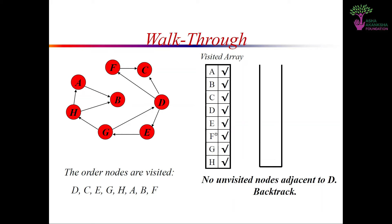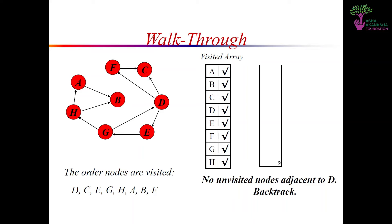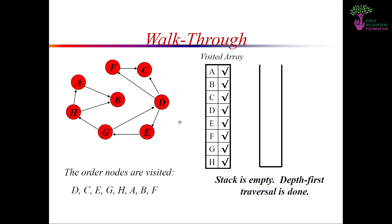We visit G, tick the visited array of G, and push it into our stack. From G we have two nodes coming out: D and H. In alphabetical order we check D first, but D has already been visited — it is ticked. So we skip D and go to H. We decide to visit H, go to H, tick it, and push it into our stack.